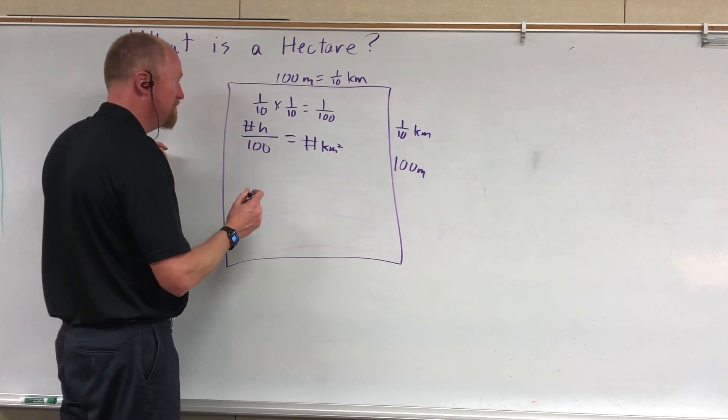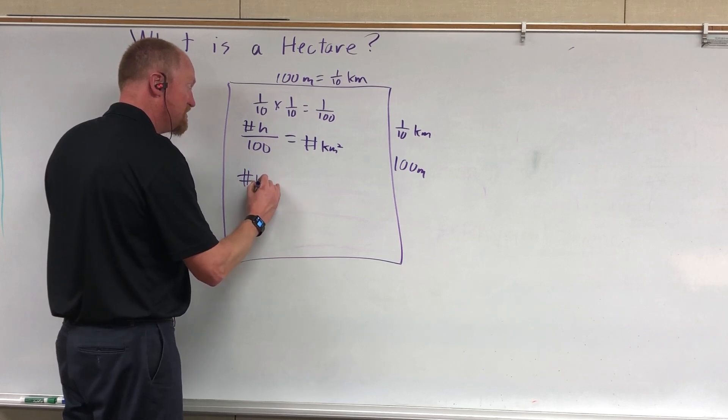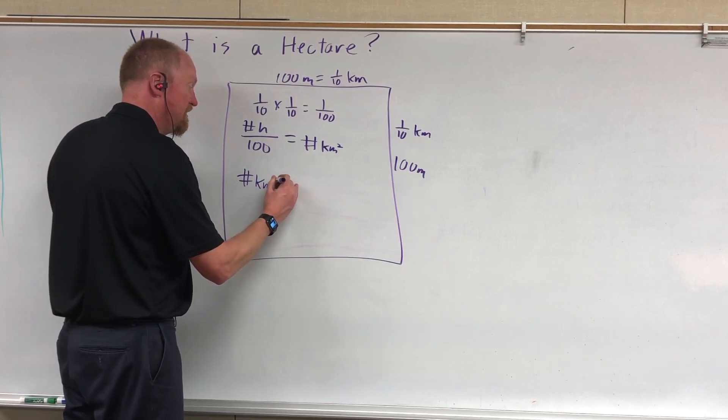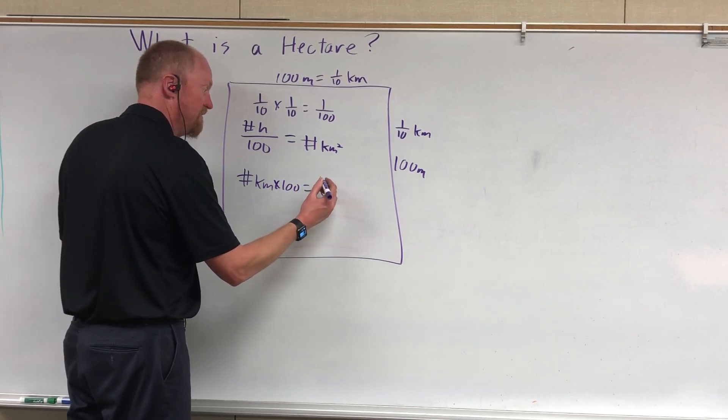If you want to go the other way, simply multiply by a hundred. So the number of square kilometers times a hundred will equal the number of hectares of land.